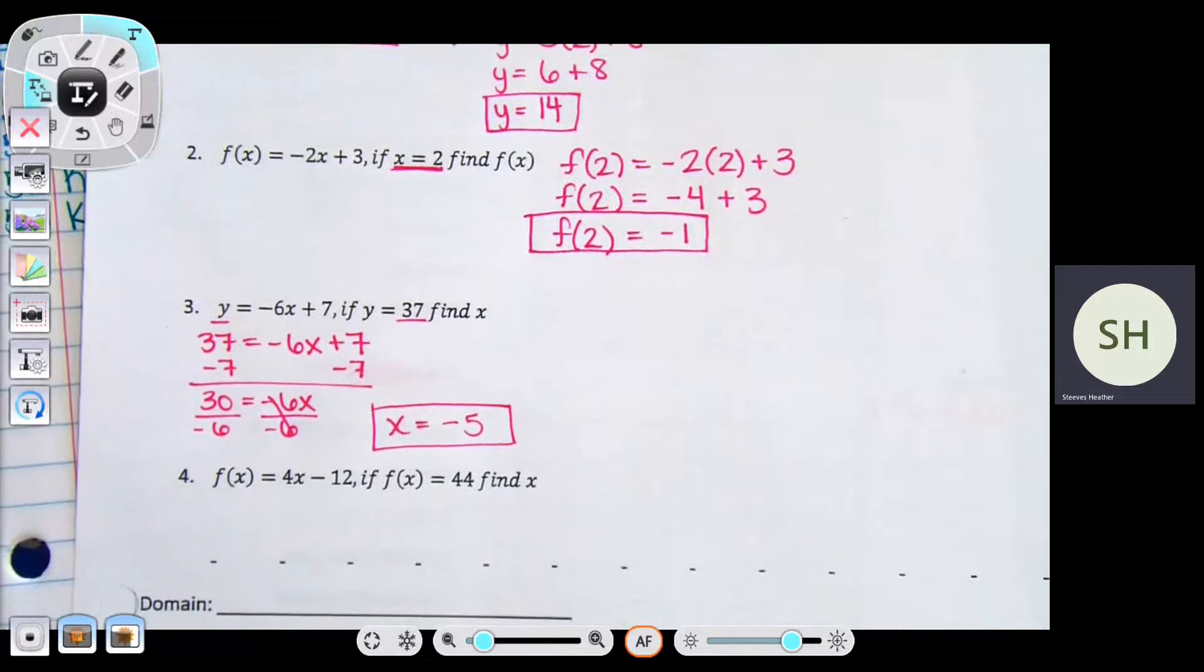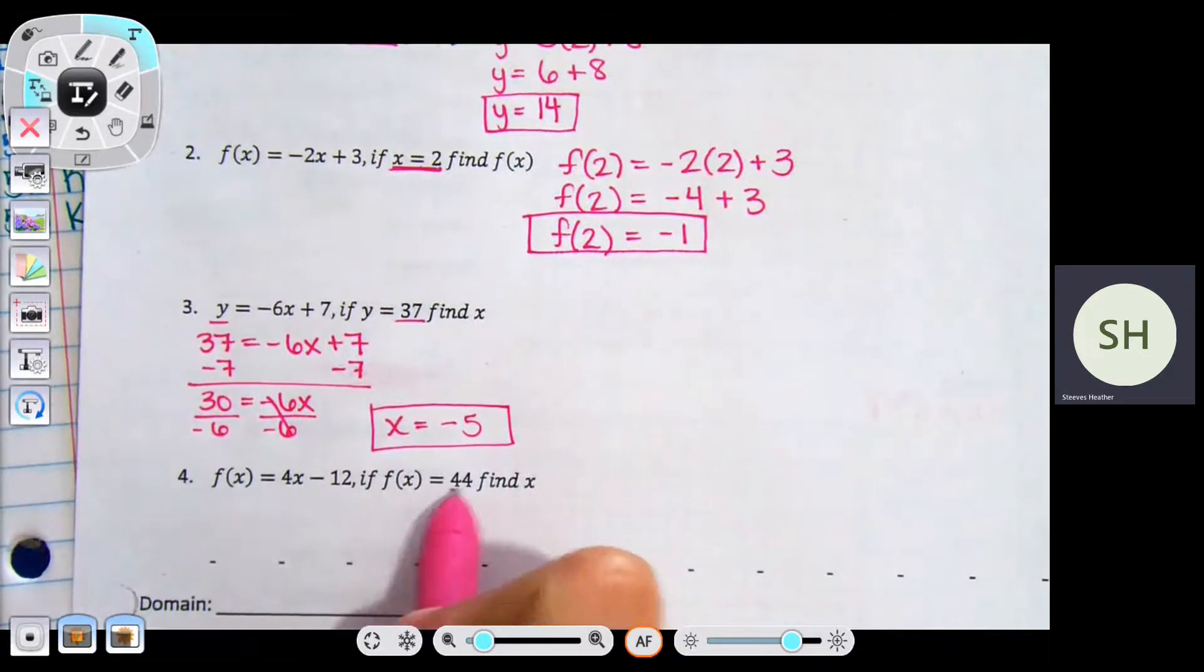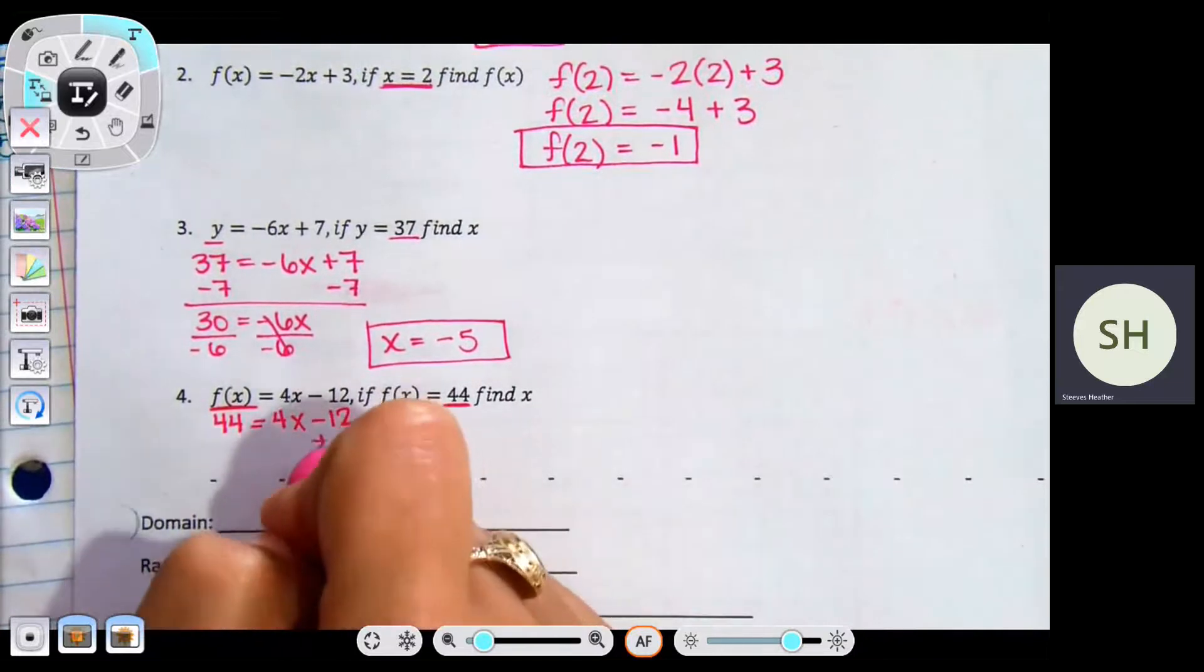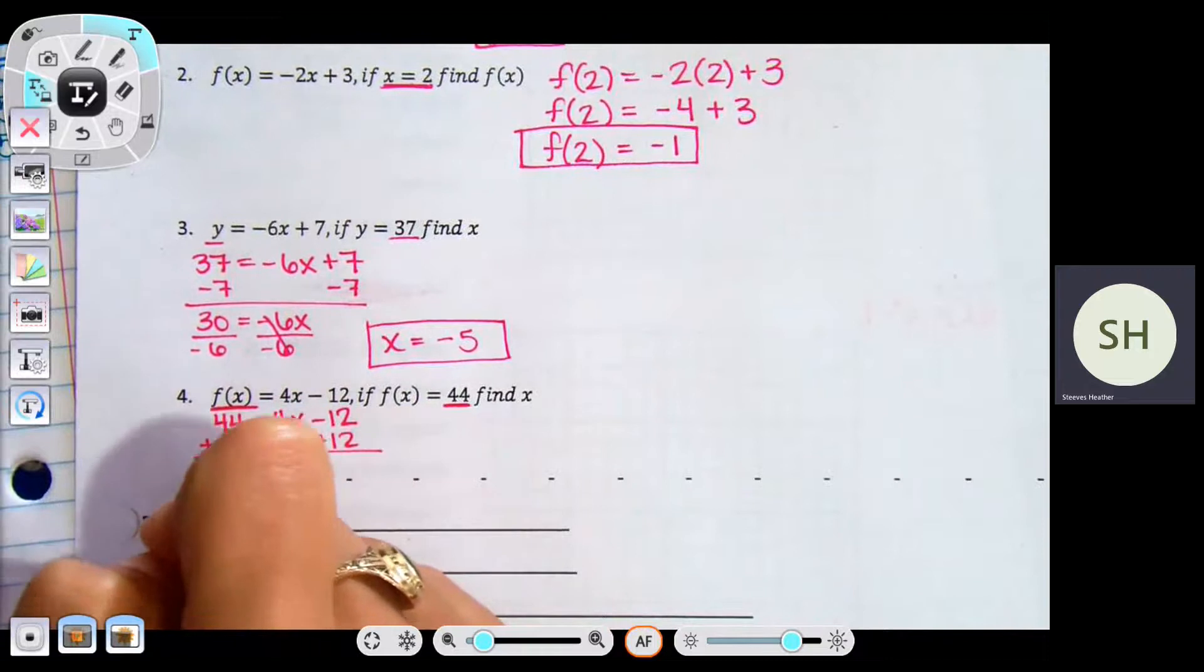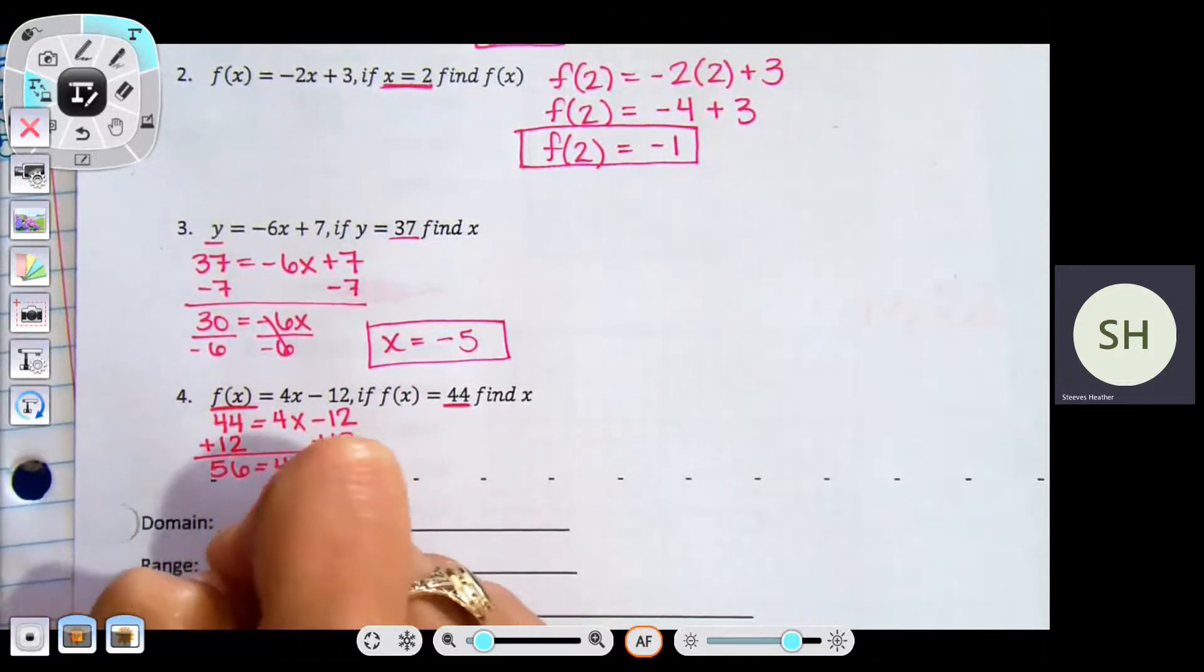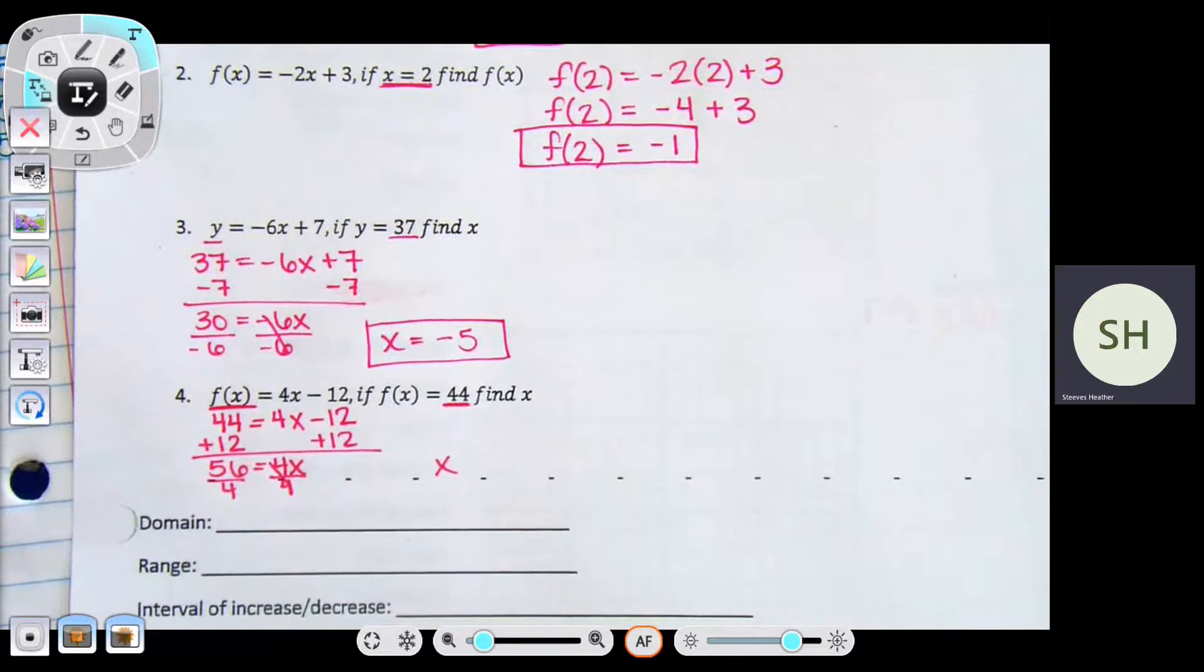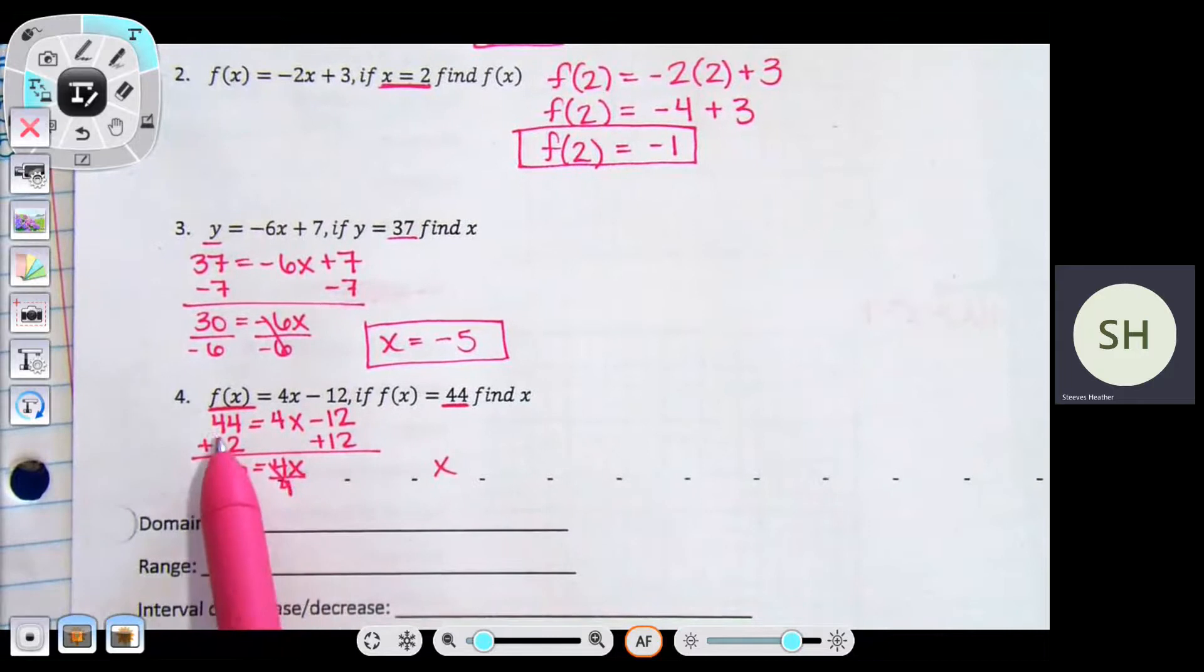Number three is an equation where number four is in function notation, but you're doing the same exact process. This time you know what y is, so you're getting rid of that. Same thing with number four. It tells you what f(x) is equal to. So you're replacing all of f(x) with 44. So what do you get for number four? I haven't even started yet. Wait, am I going too fast? I'm sorry. It's 44 when you plug it in, then I added 12 to both sides to make 56. Divide by 4 to both sides and you get 14.